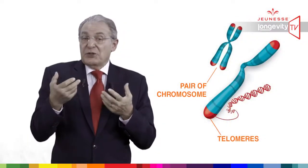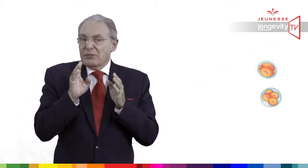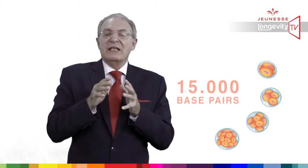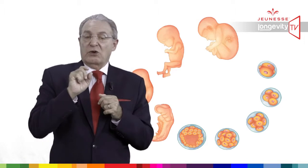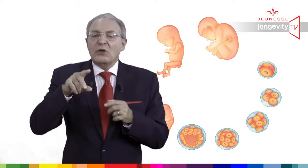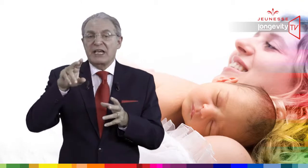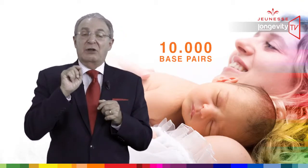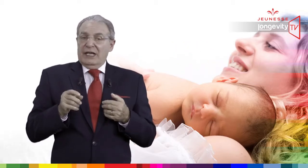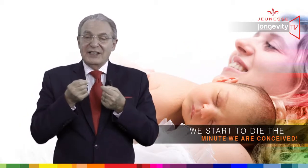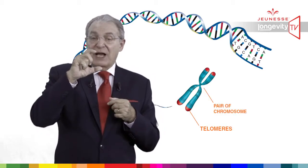Today we can measure the biological age of cells by the length of the telomere. When we are conceived, the embryo has about 15,000 base pairs in its telomere. By the way, a base pair is a standard unit of measurement in the chromosome, and the total length of a DNA strand is 3 billion base pairs. So after many replications, a newborn has only 10,000 base pairs in each telomere — we have already lost 33% of our telomere length.